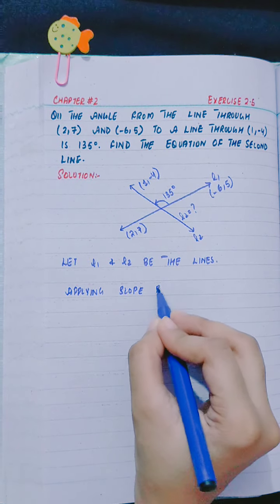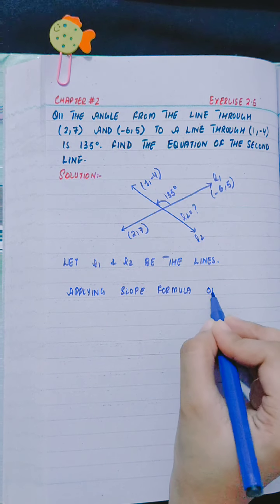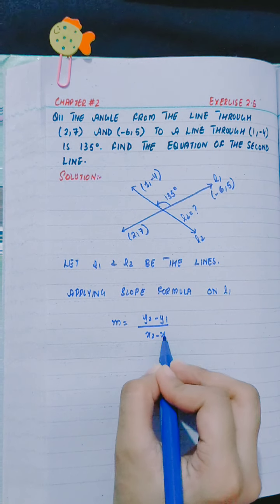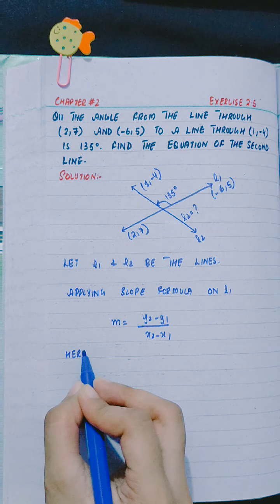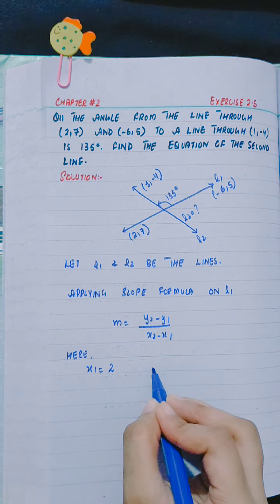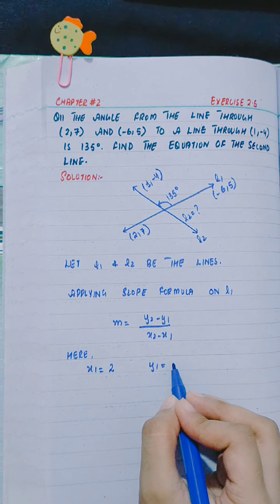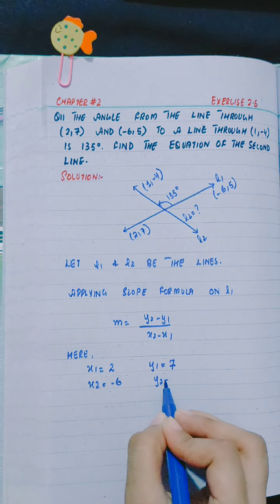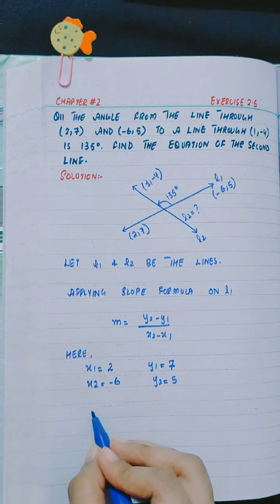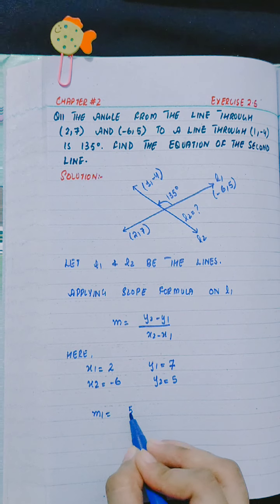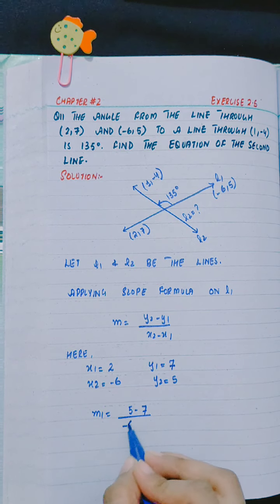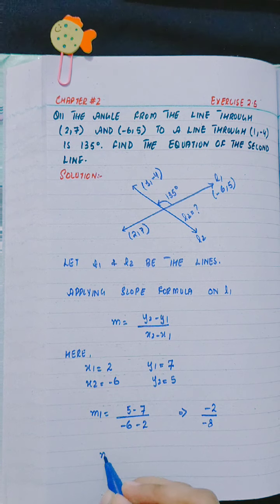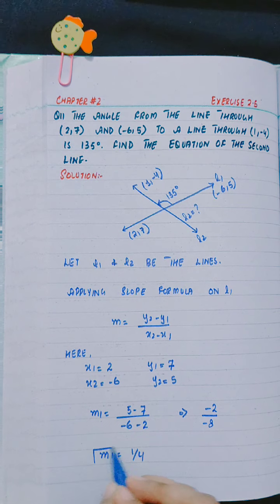Applying slope formula on L1: m equals y2 minus y1 divided by x2 minus x1. Here, x1 is 2, y1 is 7, x2 is -6, and y2 is 5. m1 equals 5 minus 7 divided by -6 minus 2, which is -2 divided by -8, and m1 equals 1/4.